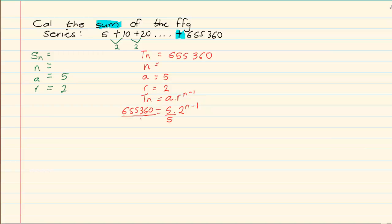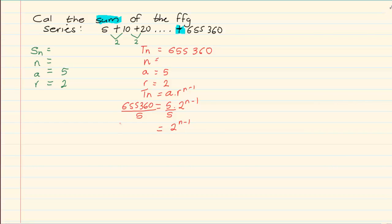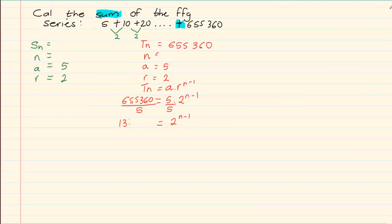Divide by 5, because what I'm doing now is trying to get my N alone. So we have 2 to the power of N minus 1 is equal to 131,072.